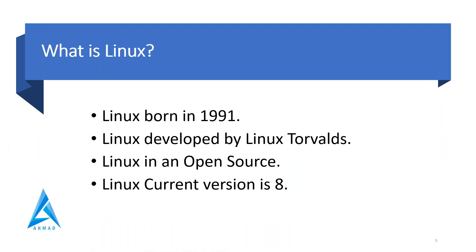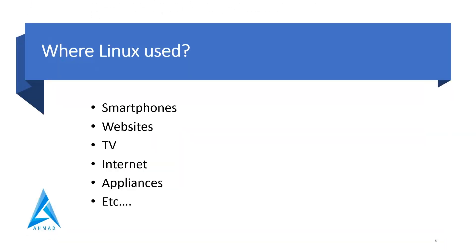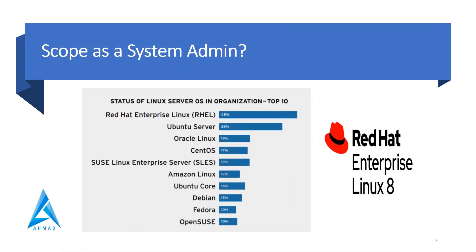Now, what is Linux? Linux is basically an open source software which was developed by Linus Torvalds, and Linux was born in 1991. The latest version is Red Hat 8. Linux is used in smartphones, websites, TVs, internet appliances, aeroplanes, and so on. Most of the programming environments use an OS, and Linux is widely used all over the world.